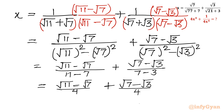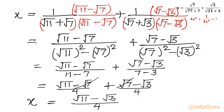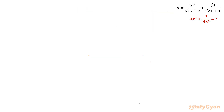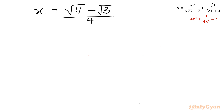The denominator is the same, so we simply add the numerators. The middle terms cancel: square root 7 minus square root 7 cancels, so we get (square root 11 minus square root 3) over 4. Thus x equals (square root 11 minus square root 3) over 4. Multiplying both sides by 4 gives 4x equal to square root 11 minus square root 3.